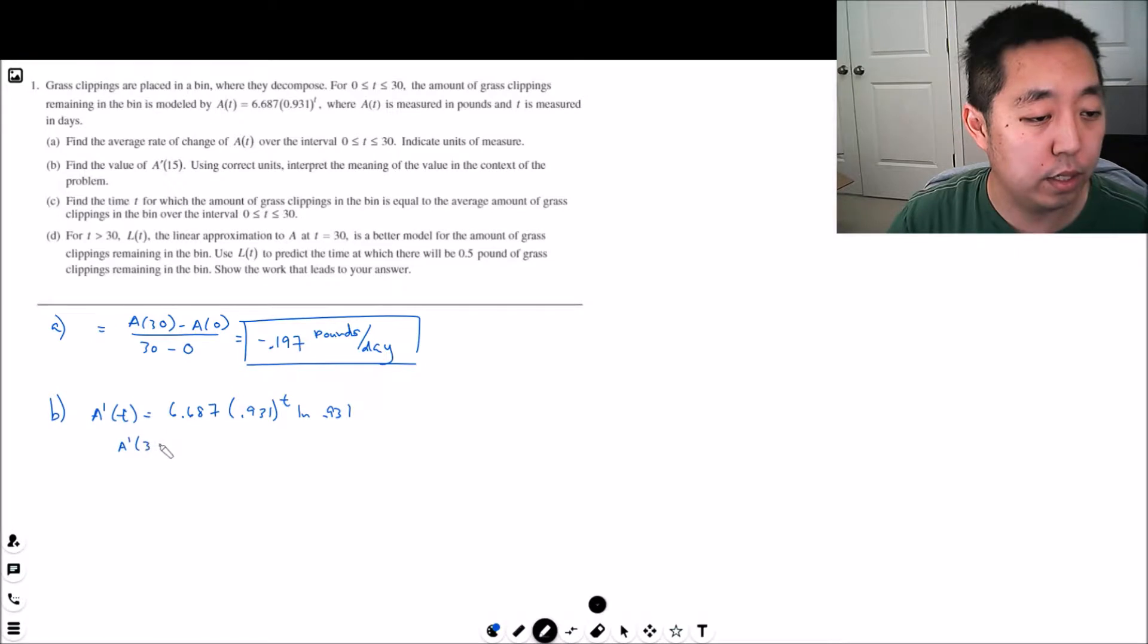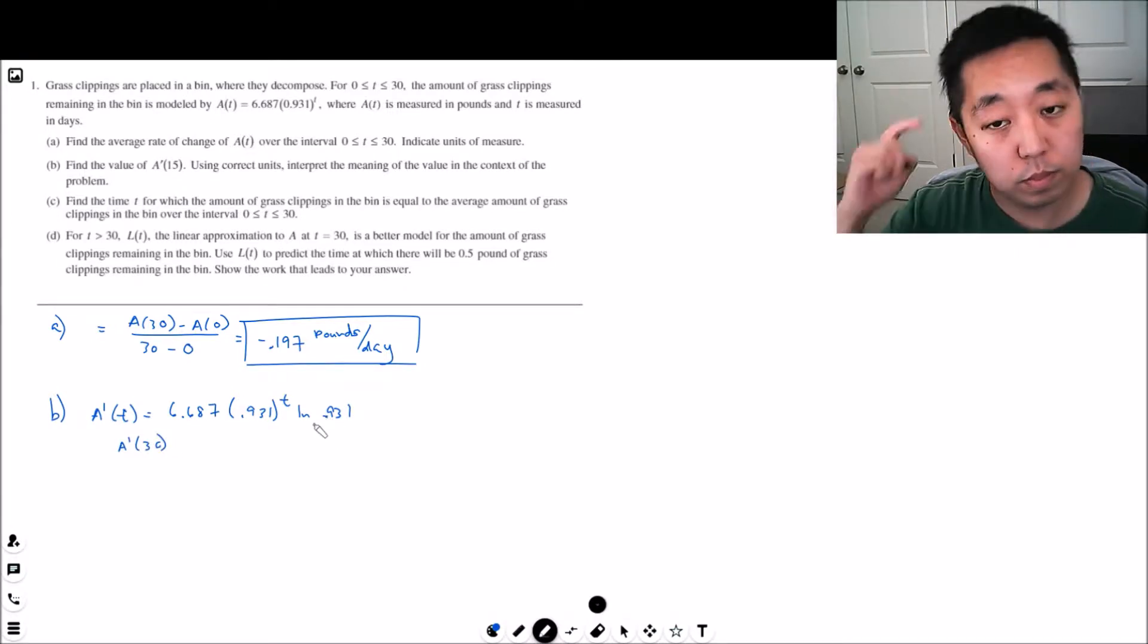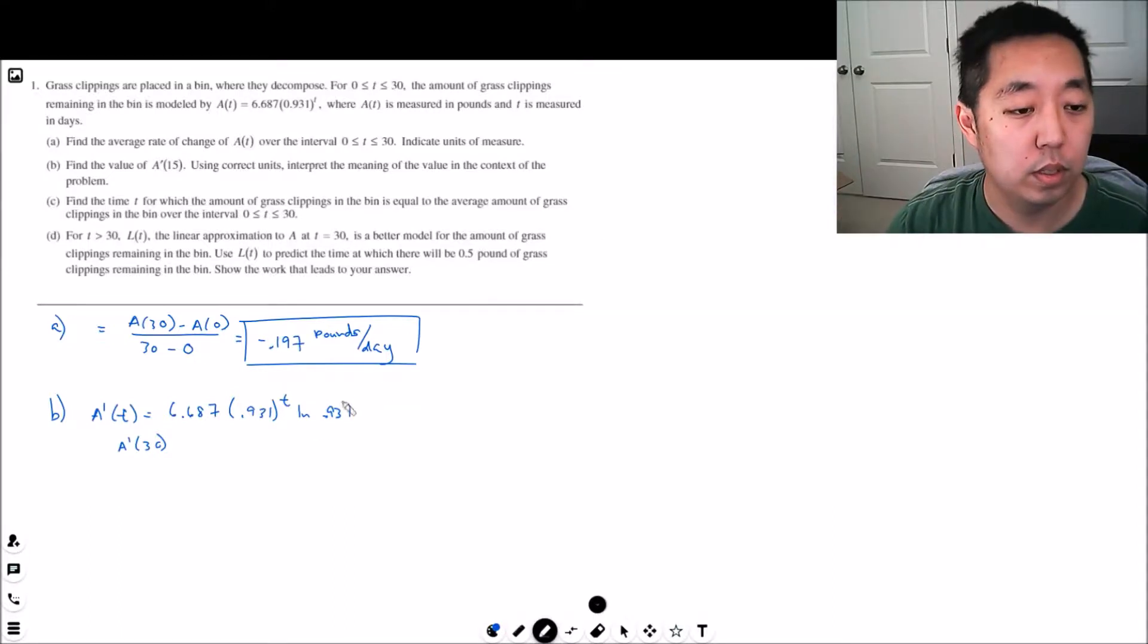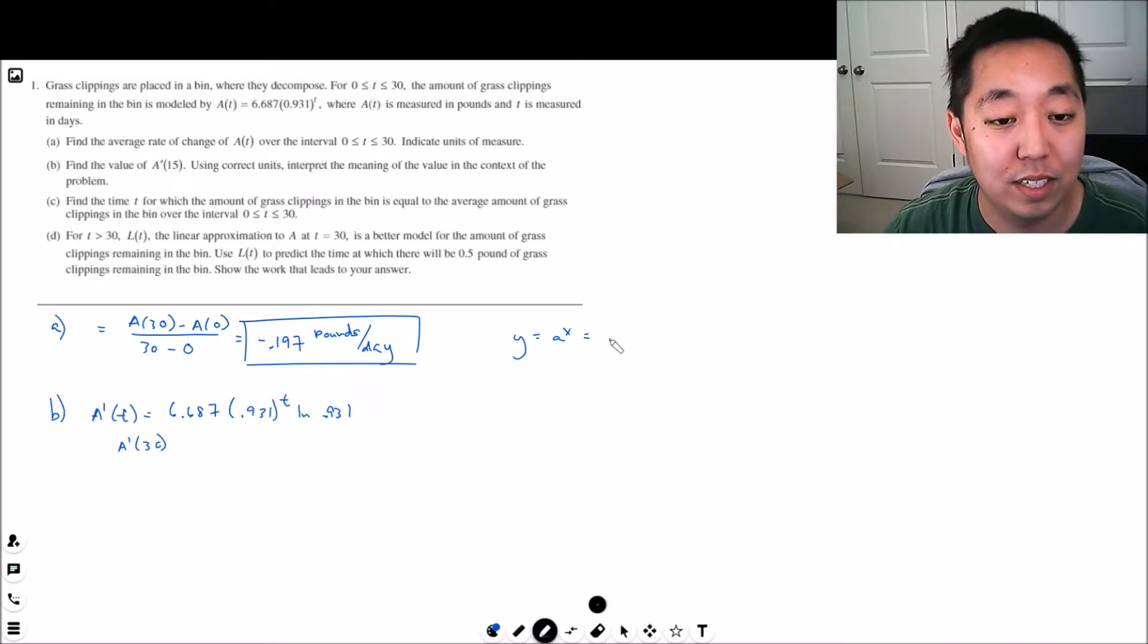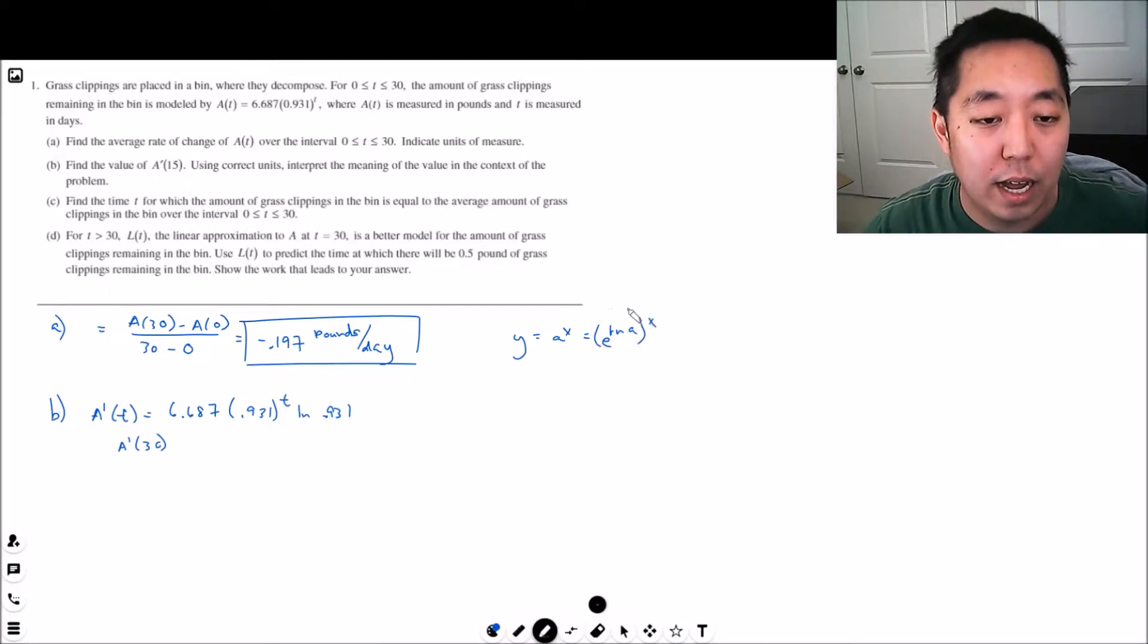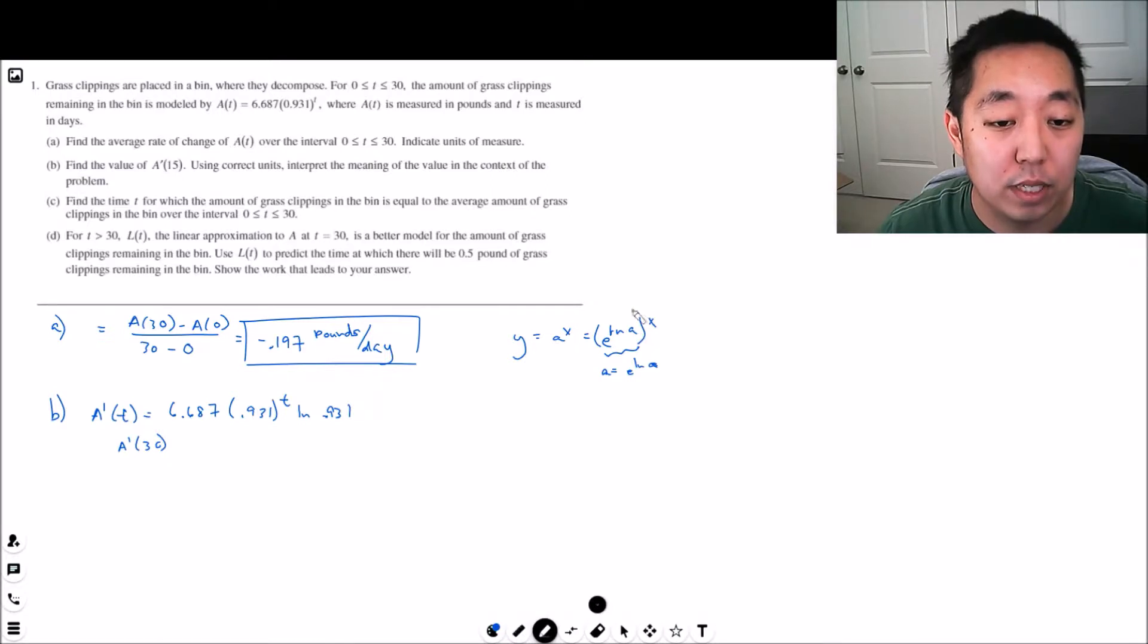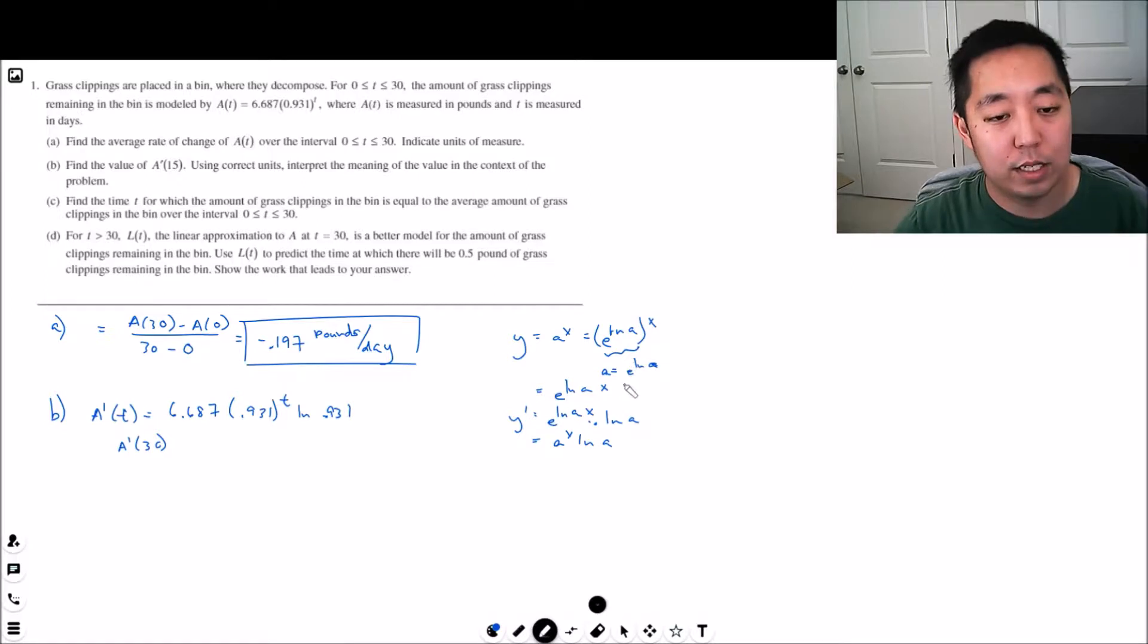So A prime at 30... I always forget if I multiply or not. I kind of always have to do this to myself. If I forget, this is the trick: a is equal to e to the natural log of a. So a to the x is really equal to e to the natural log of a times x by exponent rule. The derivative of this is e to the natural log of a times x times natural log of a. Then I convert this back: e to the natural log of a, which is a, so it's a to the x times natural log a. I always re-derive it from e just because I never remember, but it is multiply.